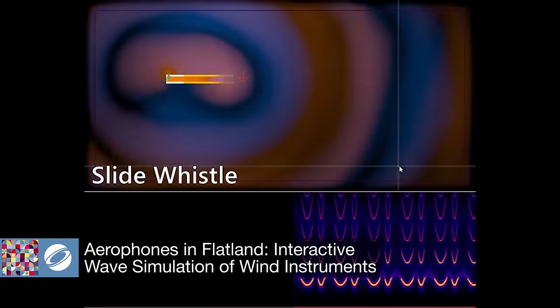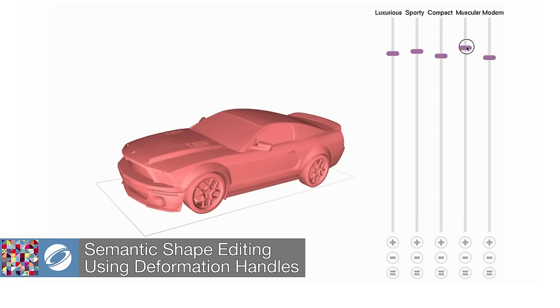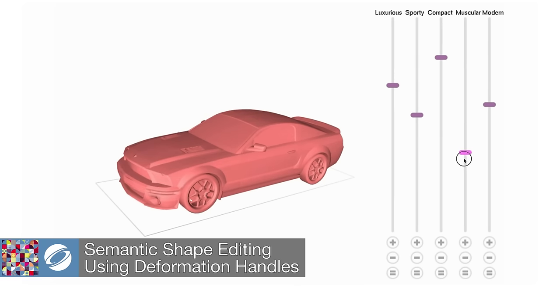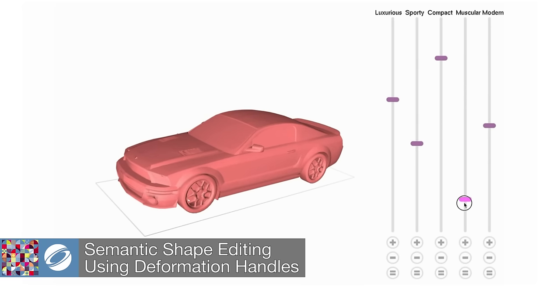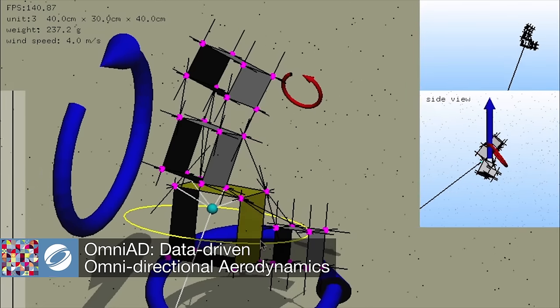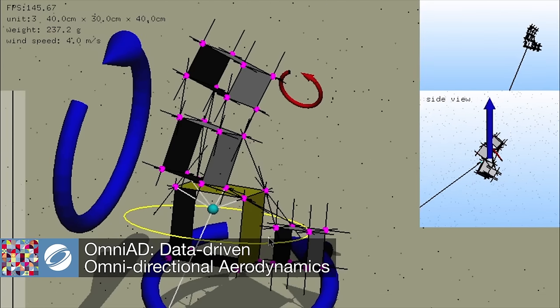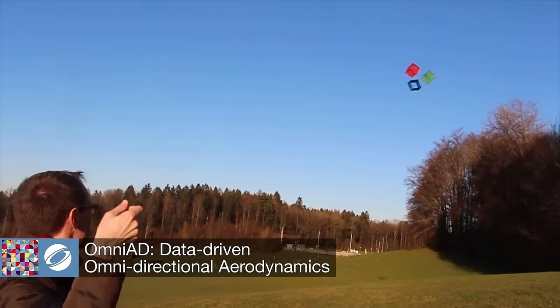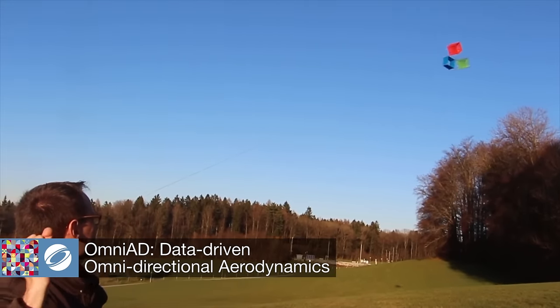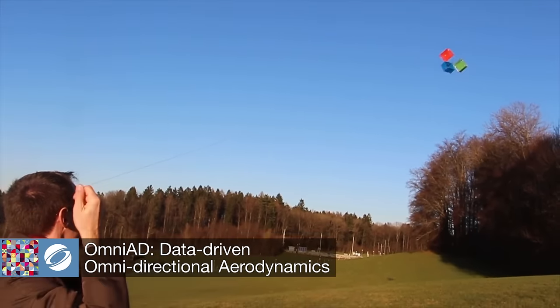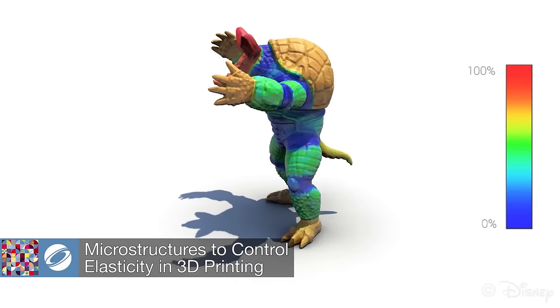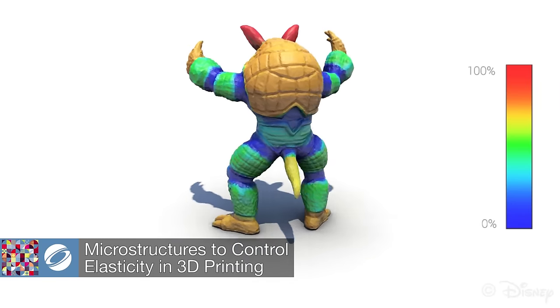SIGGRAPH can show you how to edit shapes using their semantic attributes, design and fly an aerodynamic kite, or produce objects with spatially varying elasticity using 3D printing.